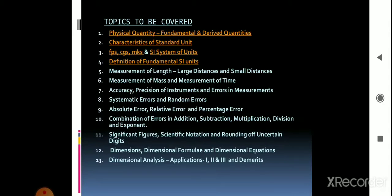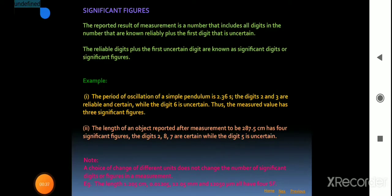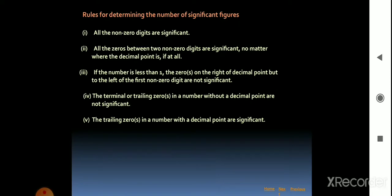Let us quickly revise the last class on significant figures. The reported result of a measurement is a number that includes all digits that are known reliably, plus the first digit that is uncertain. The reliable digits plus the first uncertain digit are known as significant digits or significant figures. The first rule: all nonzero digits are significant.